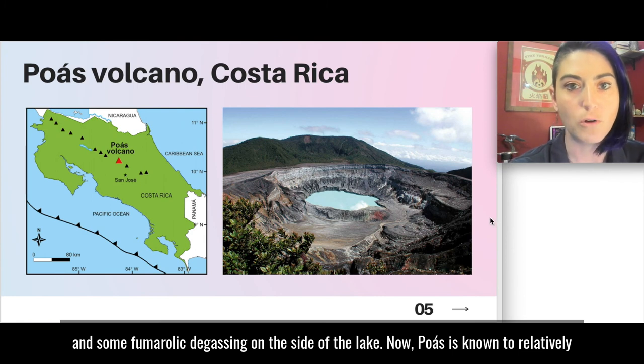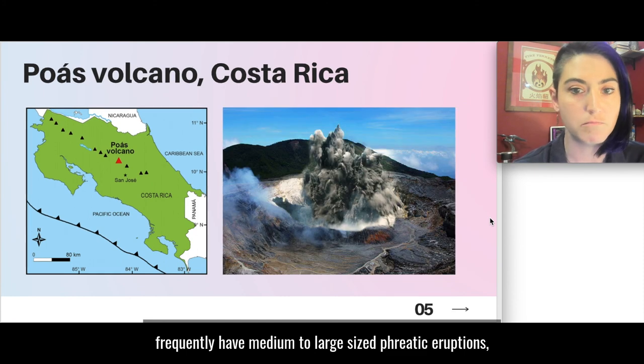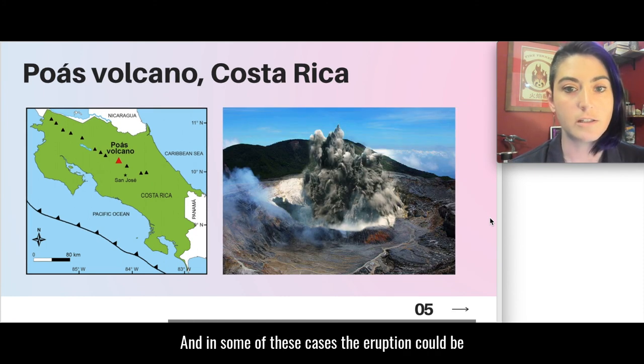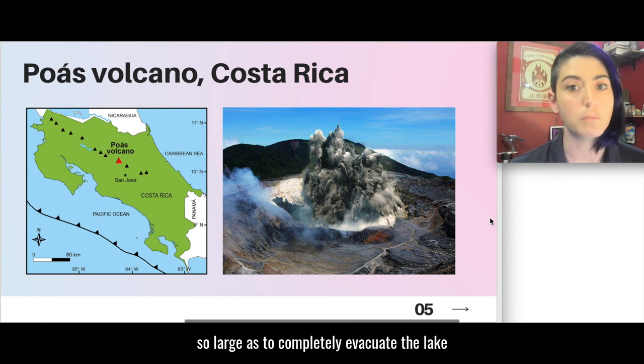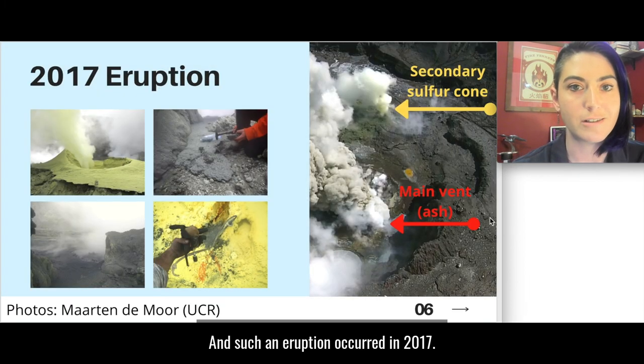Now Poas is known to relatively frequently have medium to large size phreatic eruptions like the one shown in this image. And in some of these cases the eruption can be so large as to completely evacuate the lake and to totally change the morphology of what's inside of the crater. And such an eruption occurred in 2017.